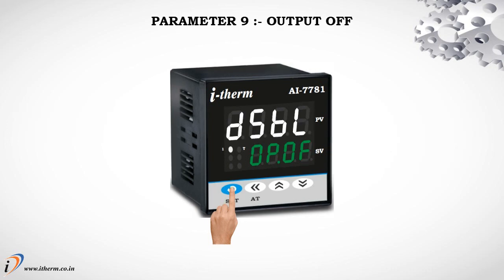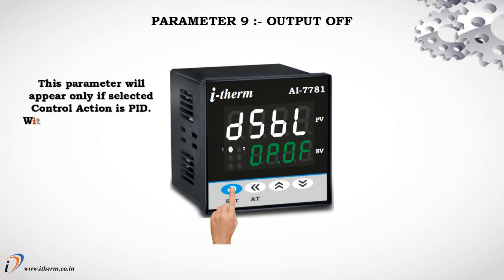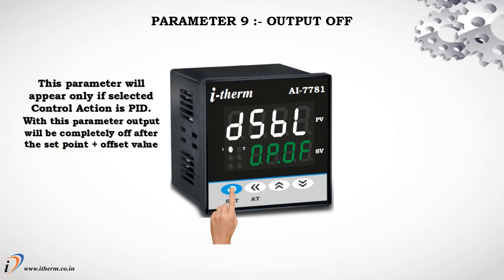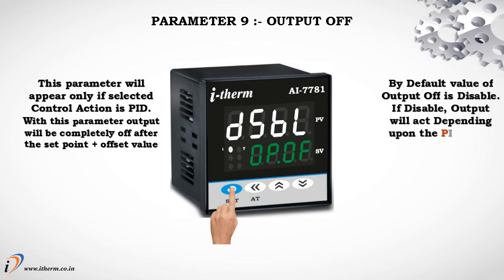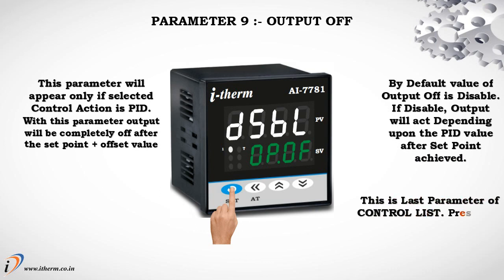Parameter 9 is Output Off. This parameter will appear only if the selected control action is PID. With this parameter, the output will be completely OFF after the set point plus offset value is reached. By default, Output Off is disabled. If disabled, the output will act depending upon the PID value after the set point is achieved. This is the last parameter of the control list. Press the Set key to enter in run mode.